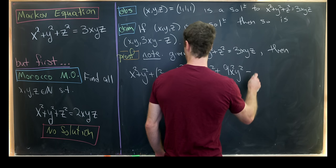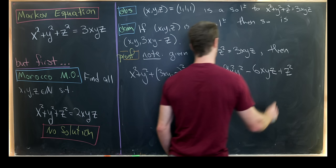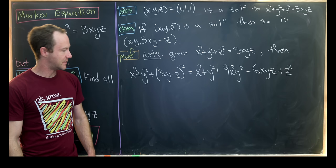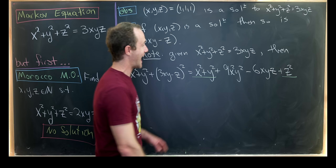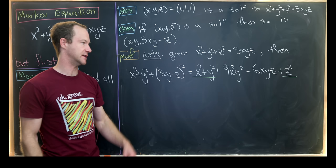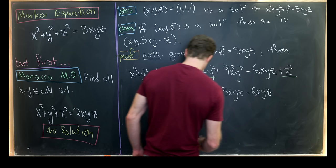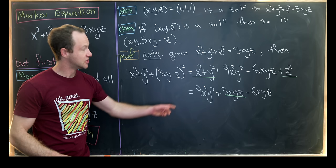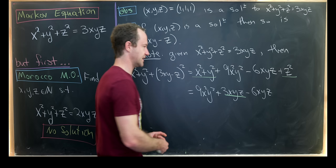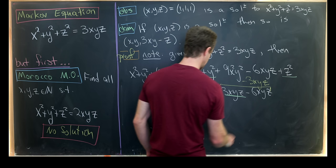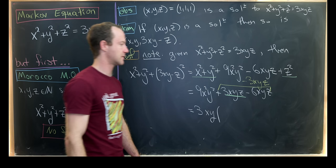And then we can calculate X² + Y² + (3XY - Z)² and hopefully that reduces. So multiplying out, we'll get X² + Y² plus, so we have 9X²Y² - 6XYZ and then plus Z². So that's multiplying that binomial out. But now let's notice that this X² plus Y² and then this Z² will add up to 3XYZ by our initial assumption. So that'll leave us with 9X²Y² + 3XYZ - 6XYZ.